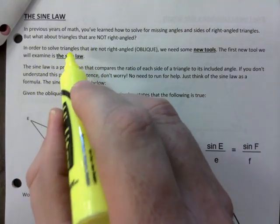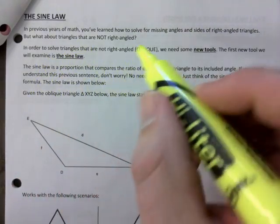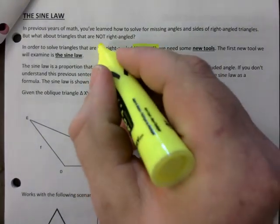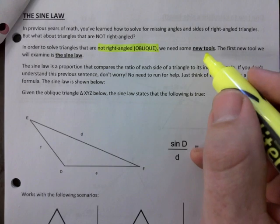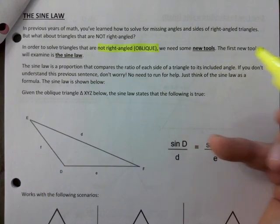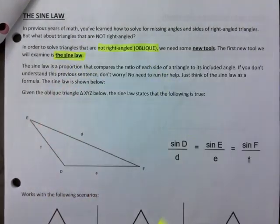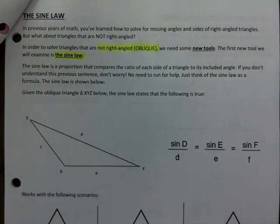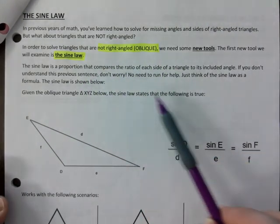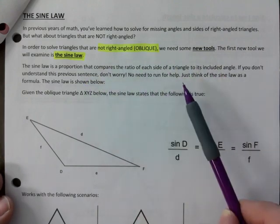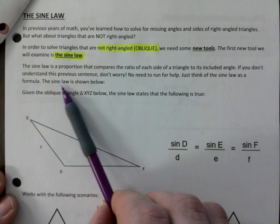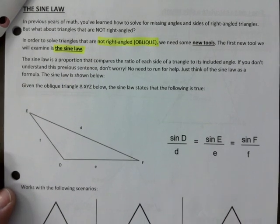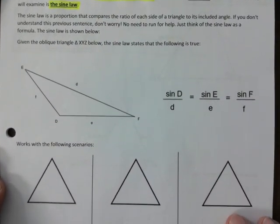In order to solve triangles that are not right-angled, those are called oblique. Oblique is what we call anything that isn't right. We need some new tools. The first new tool will be the sine law. That's the first one we're going to learn. And this explains what it actually is. But just think of sine law as a formula, and the sine law is shown below. So this is, in a nutshell, what the sine law states.